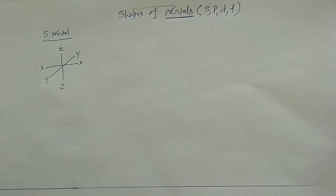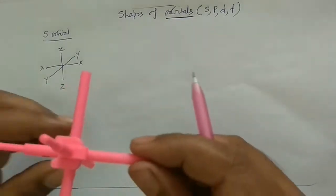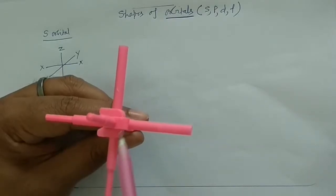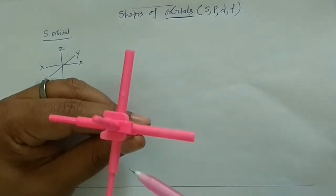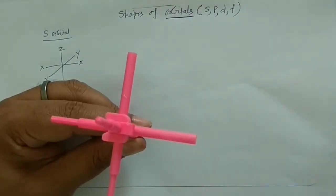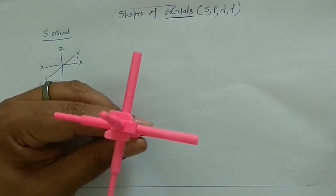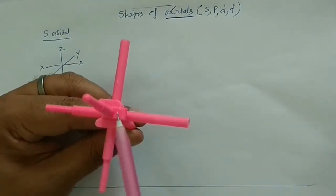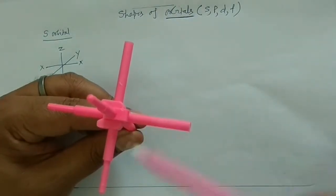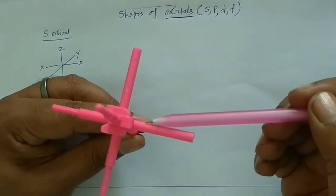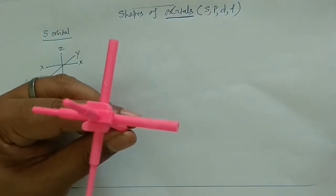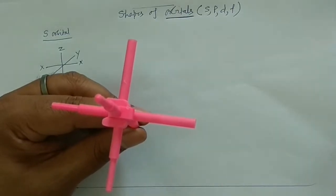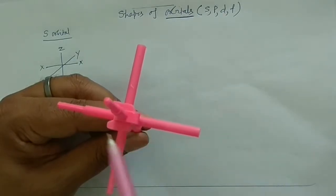You can see these axes: z axis going above and below the plane, x and y forming 90-degree angles with each other — all are perpendicular to each other. For the s orbital, whatever electrons are present, they would be symmetrically distributed among all the axes.